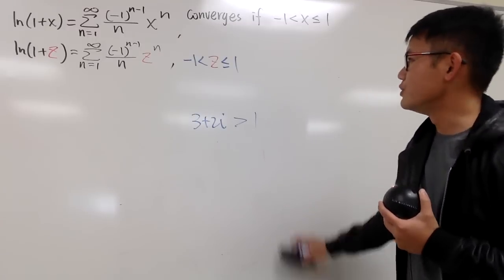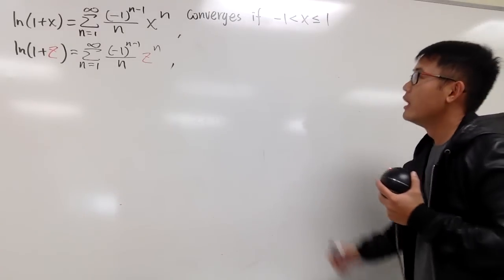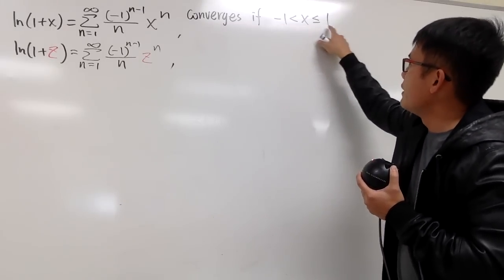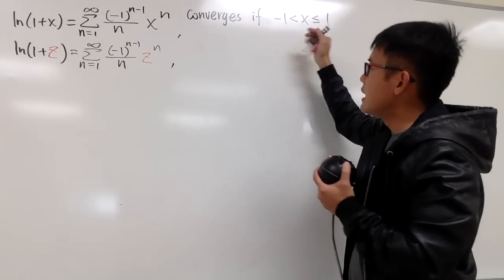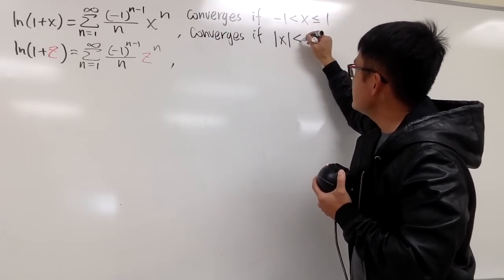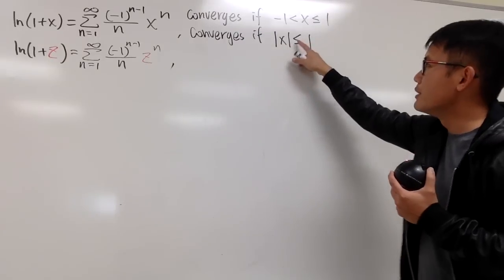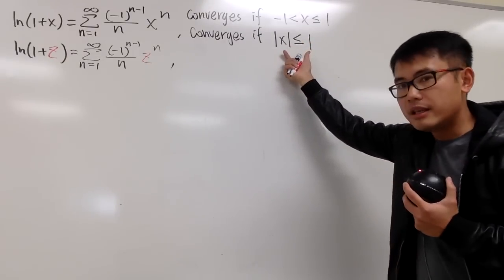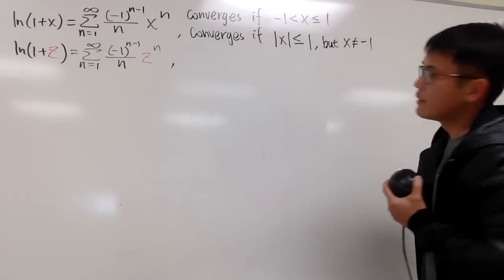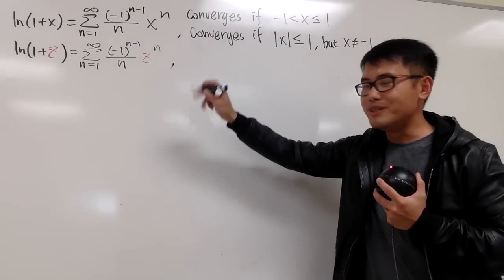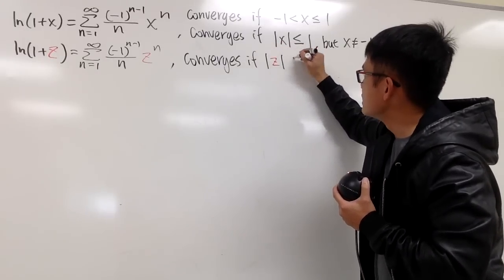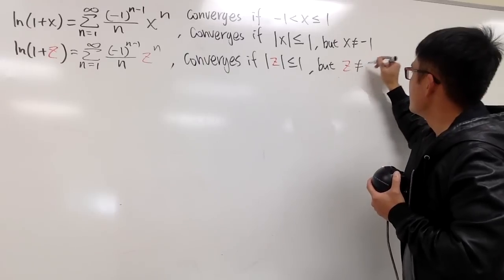Instead of comparing the complex number directly, we have to use the absolute value of the complex number. When I say x is between negative 1 and 1, I can restate it as: the series converges if the absolute value of x is less than or equal to 1, but x cannot equal negative 1. So similarly, for complex z, this converges if the absolute value of z is less than or equal to 1, but z cannot equal negative 1.